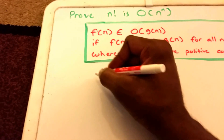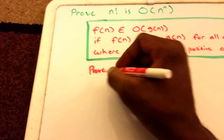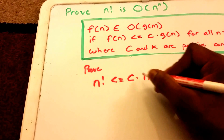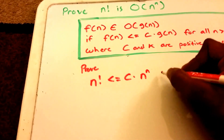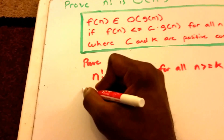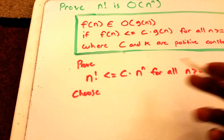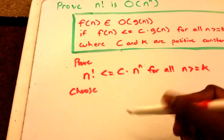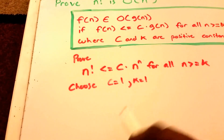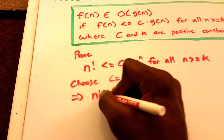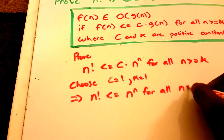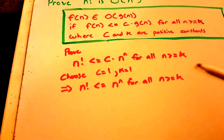For this question, all we have to do is prove that n factorial is less than or equal to some constant times our g of n, which is n to the power of n, for all values of n greater than or equal to some constant k. I'm going to choose c equals 1 and k equals 1. So now we get n factorial is less than or equal to n to the power of n for all n greater than or equal to 1, and we have to show or prove this.